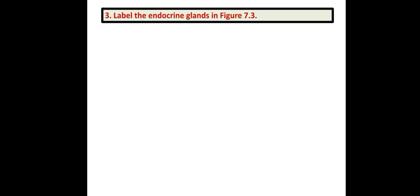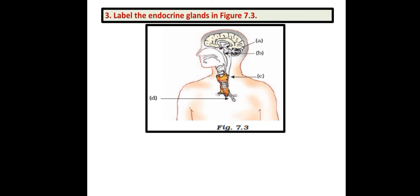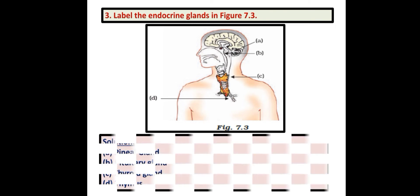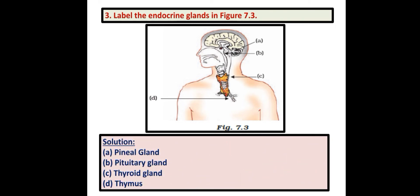Here is the next question: Label the endocrine glands in figure 7.3. Four endocrine glands are labeled here. A is the pineal gland and B is the pituitary gland — both are located in the brain. C is the thyroid gland, located in the neck. D is the thymus gland, located in the chest.